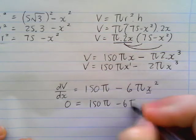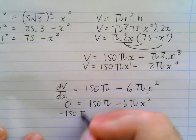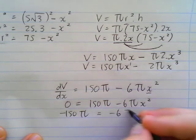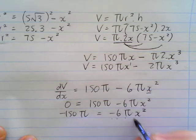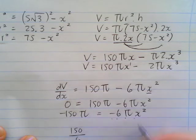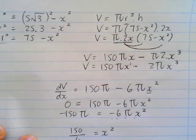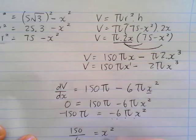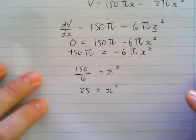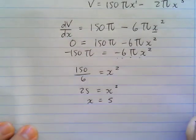We're going to bring -150π = -6πx². Divide by -6, so we're going to have 150/6. Remember, the π's would cancel, equals x². 150 and 6, that's going to give us 25 equals x². Therefore, x must be equal to √25 = 5.